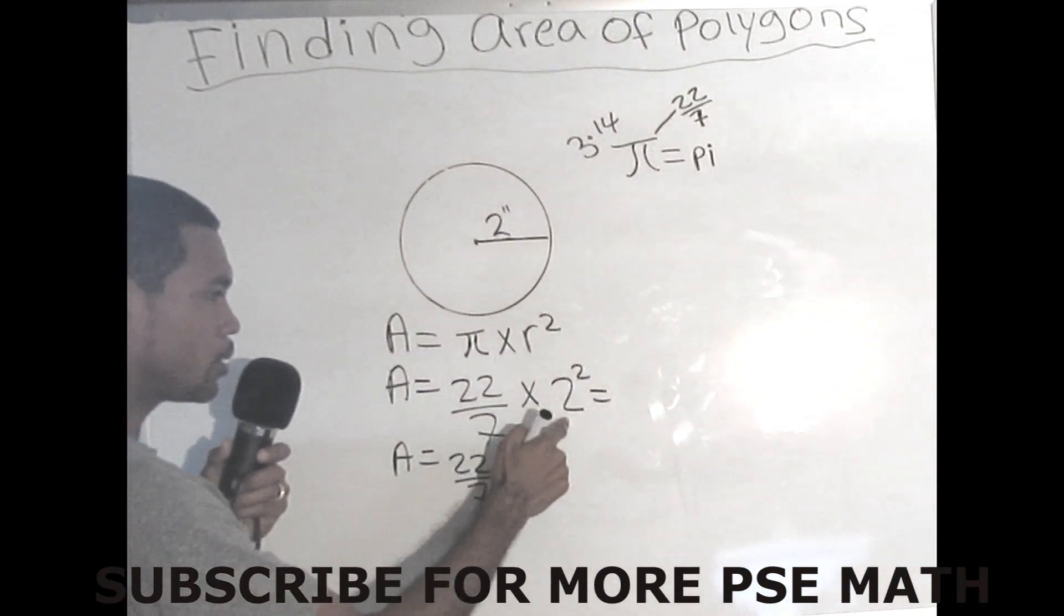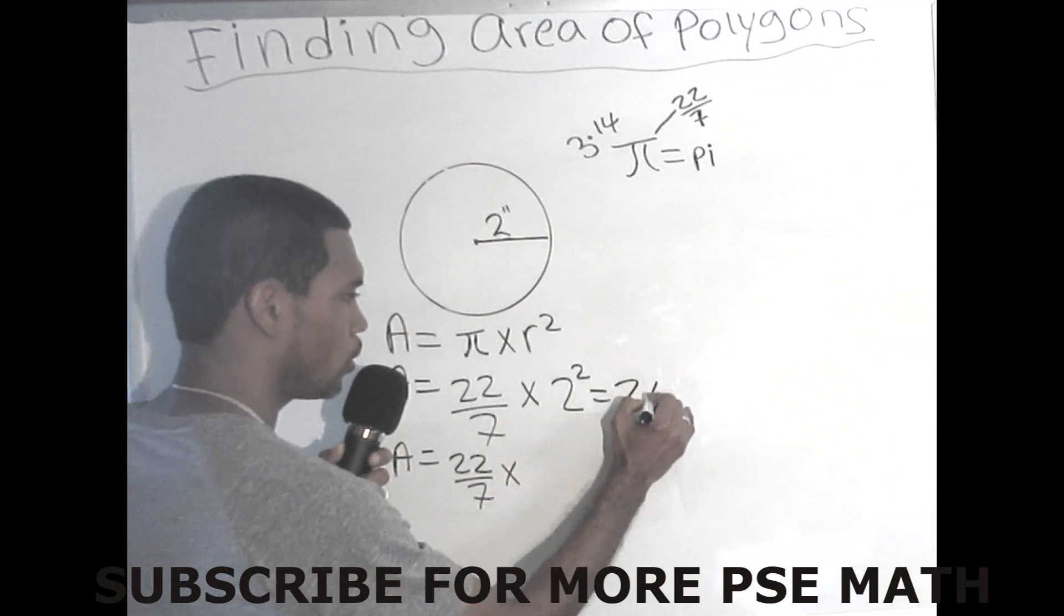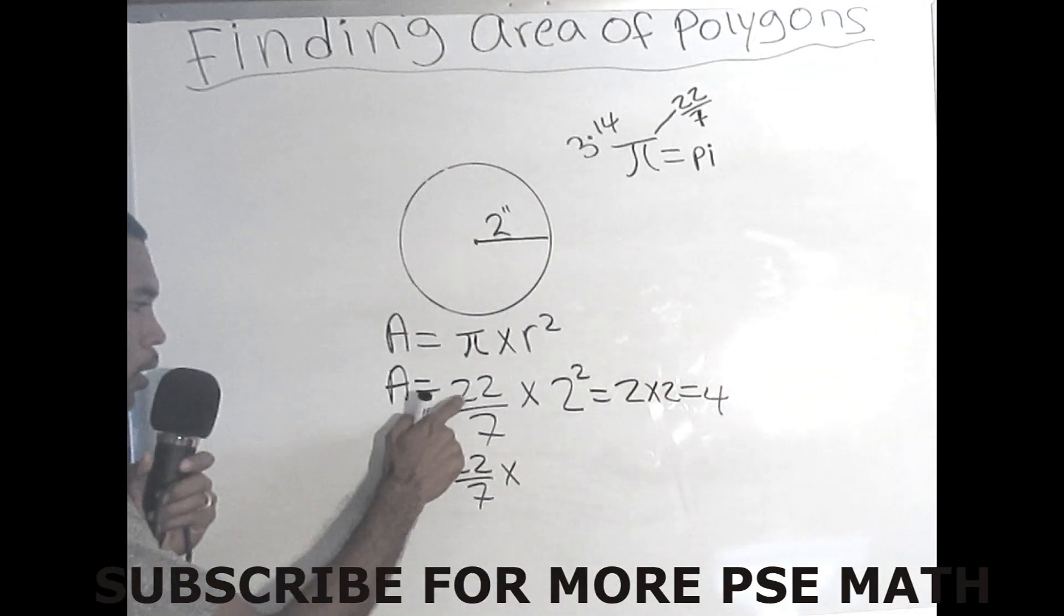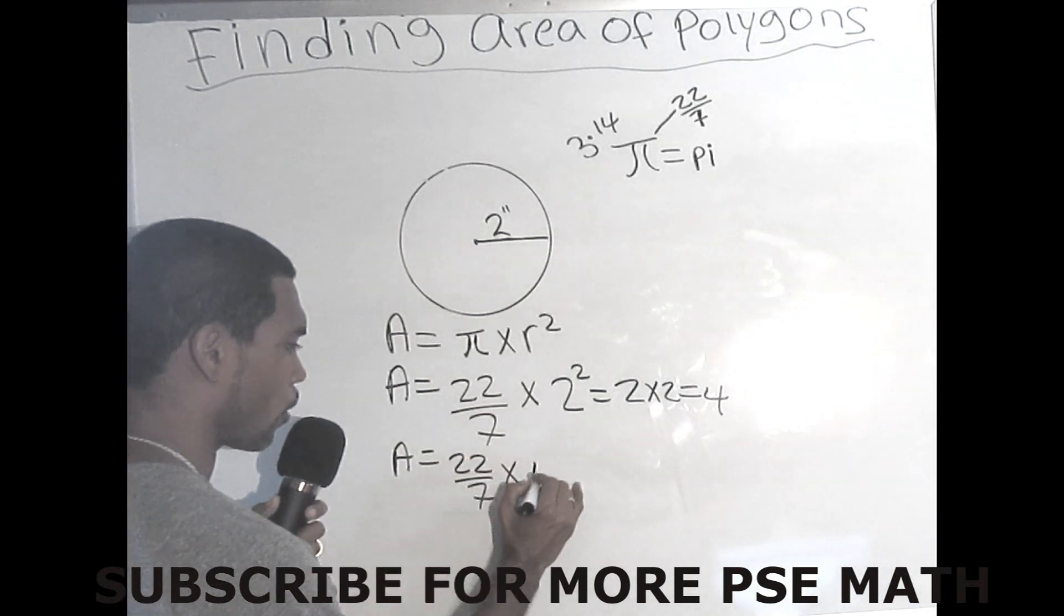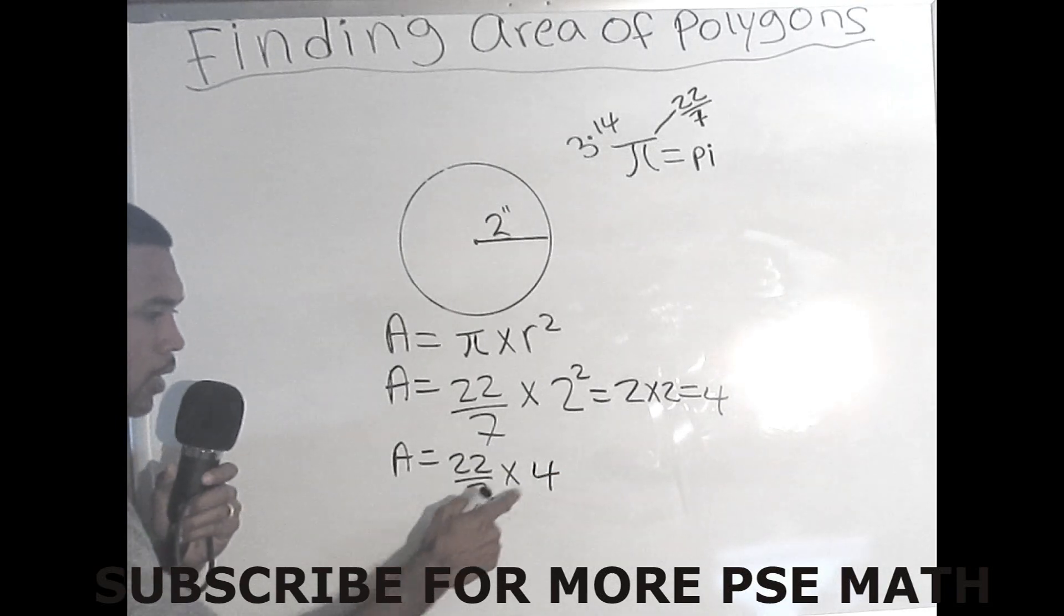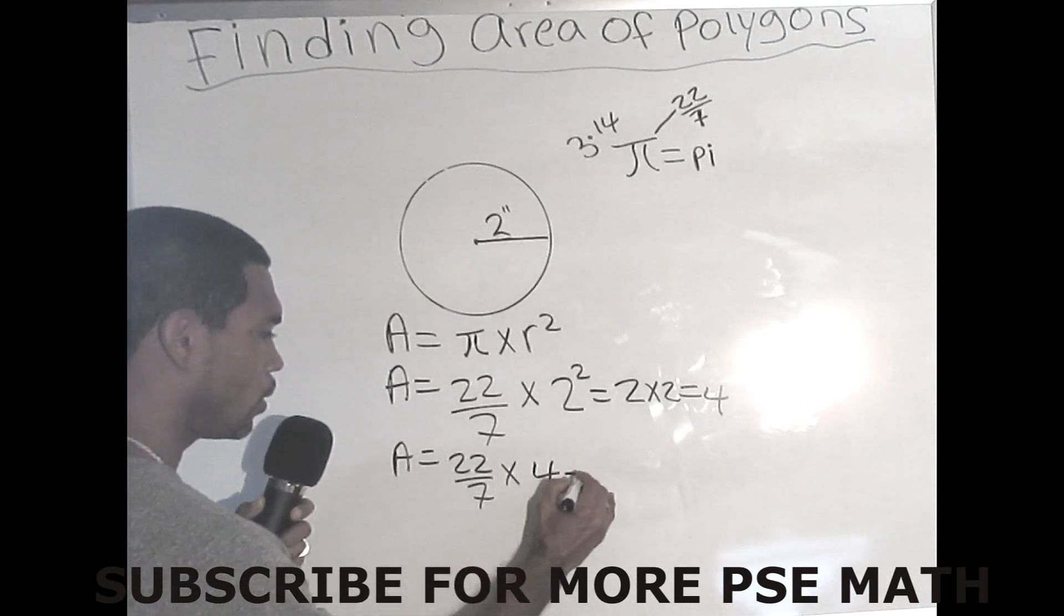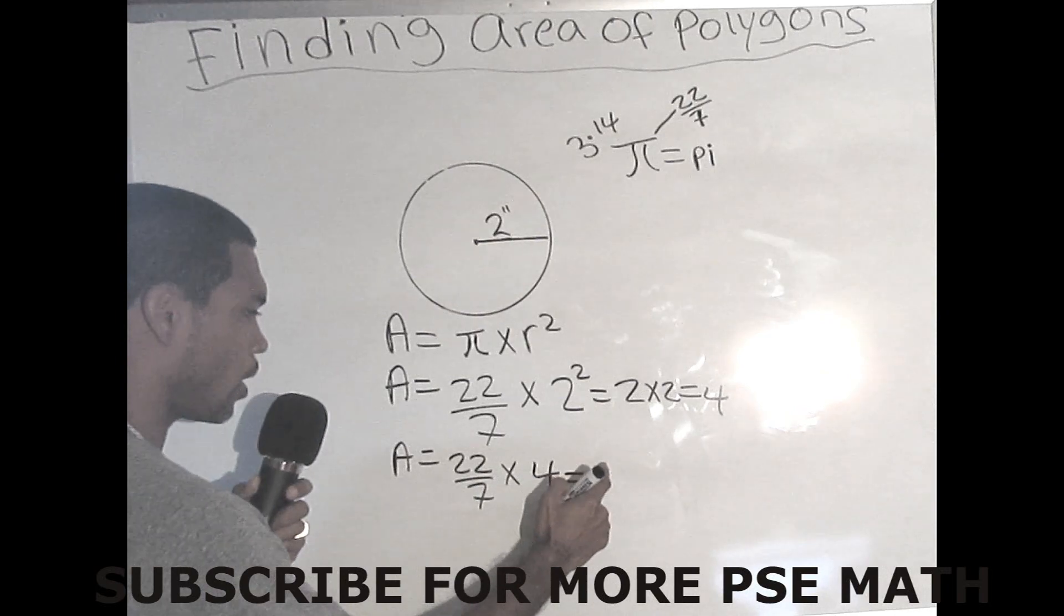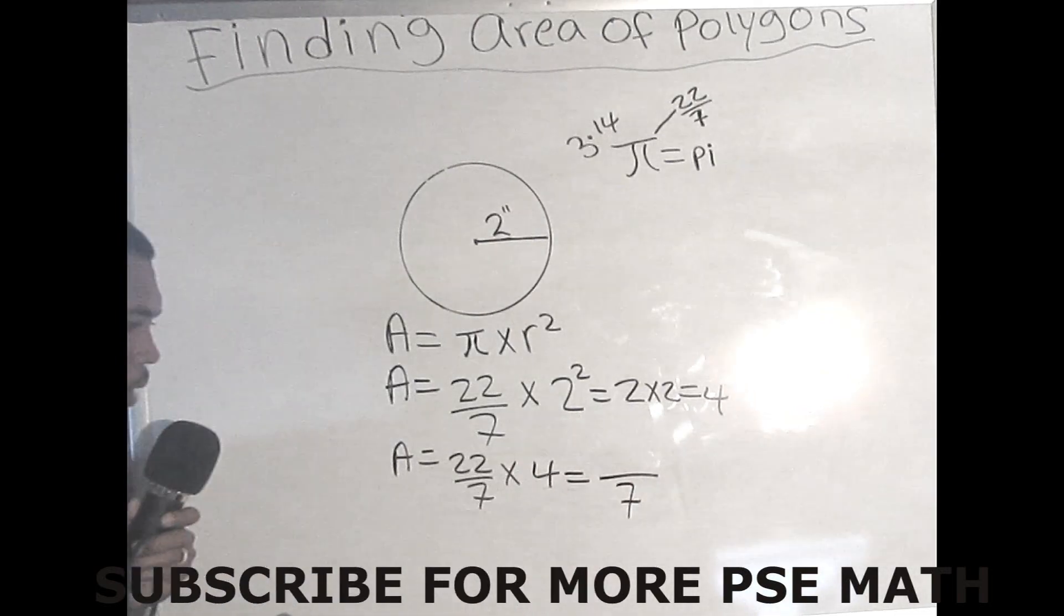Then we continue. So area equals 22 over 7 times 2 squared. And remember 2 squared is simply 2 times 2, which will equal to 4. So we bring down our times 2 squared, which is 4. And usually you will see if you could cancel the 7 into this number, but here we can't. So what we need to do is to multiply 22 times 4 and you divide it by your 7.